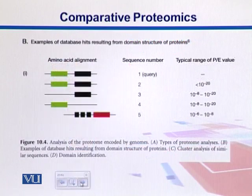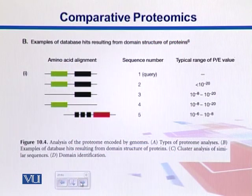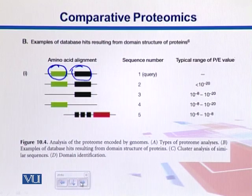In this example we are looking at database searches where some proteins are aligned together. Domains are specific protein structures made up of specific amino acids arranged into a particular structure. Here we have proteins which are similar to one another because they share similar domains.